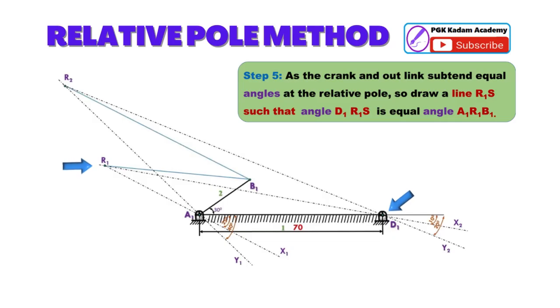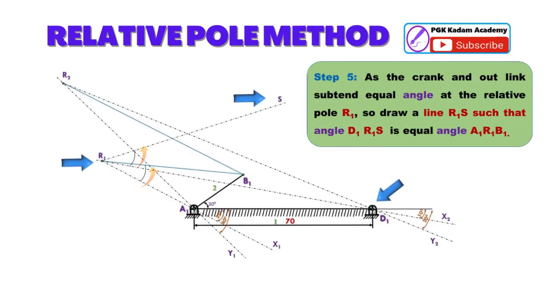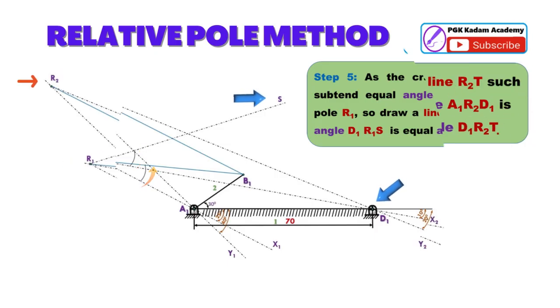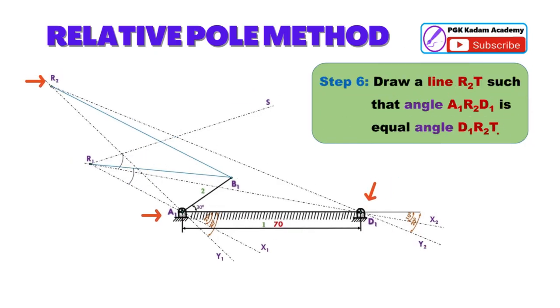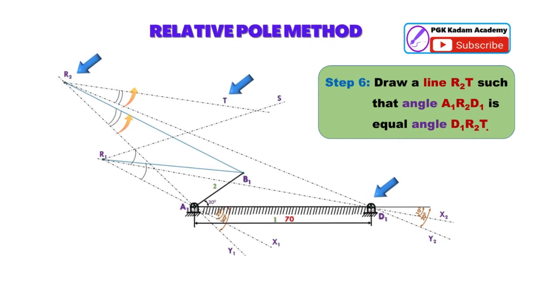Step 5: As the crank and out links obtained equal angle at the relative pole R1, so draw a line R1S such that angle D1R1S is equal to angle A1R1B1.